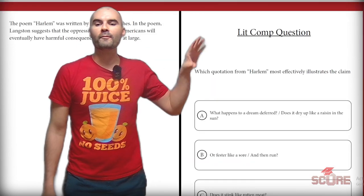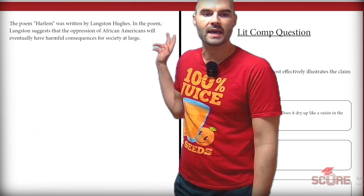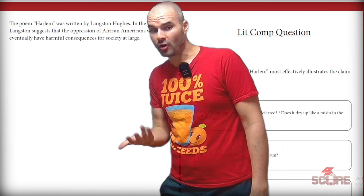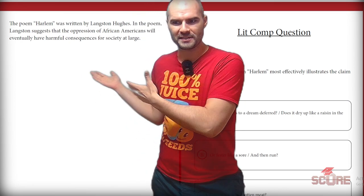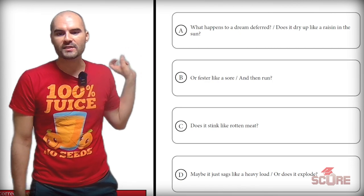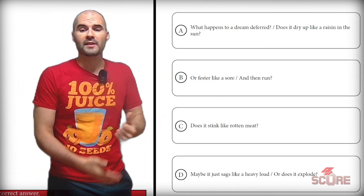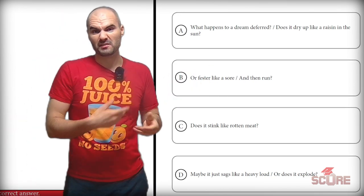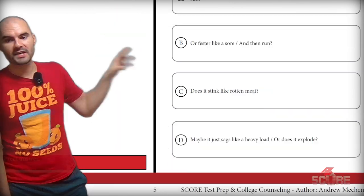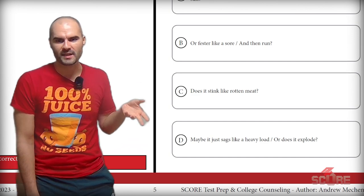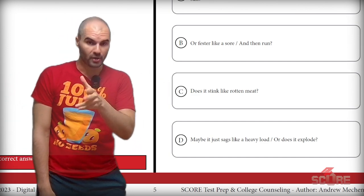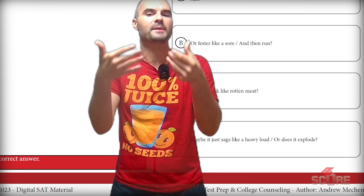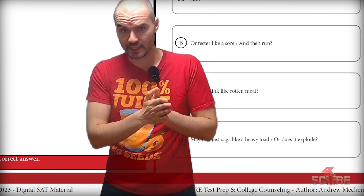I'm thinking B is going to be our best answer for The Chimney Sweeper. Our last poem is Harlem, and the claim says: Langston Hughes suggests that the oppression of African Americans will eventually have harmful consequences for society at large. It's a really short poem, so it's easy to go through all the options. Option A says: 'What happens to a dream deferred? Does it dry up like a raisin in the sun?' — that just poses a question about whether the dream would disappear. Option B: 'Or fester like a sore, and then run' — suggesting painful, long-term problems. Option C: 'Does it stink like rotten meat?' — it would smell bad, but not clear about societal problems. Option D: 'Or does it explode?' — I think that last one gives us the clearest answer, since explosion implies violence and problems if the dream continues to be deferred. That's the idea that the American dream is being deferred for African Americans who aren't given the same rights and opportunities. D is your best answer.